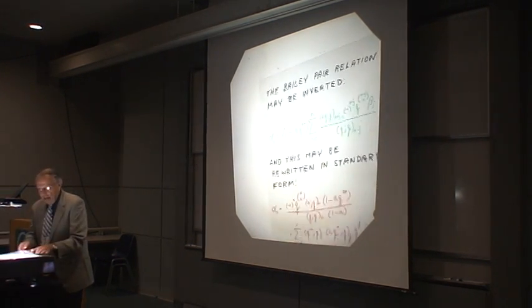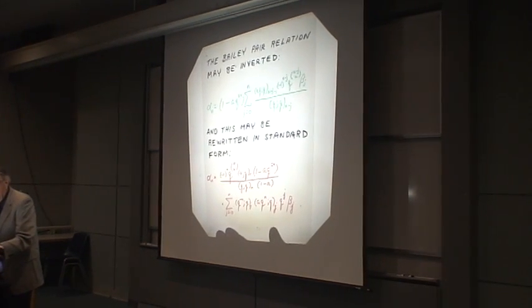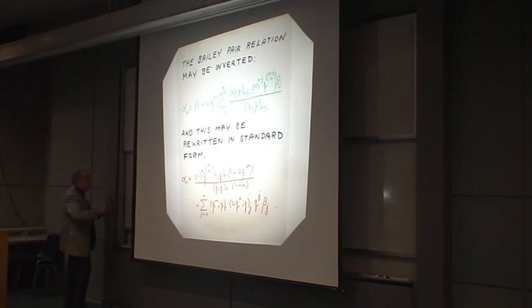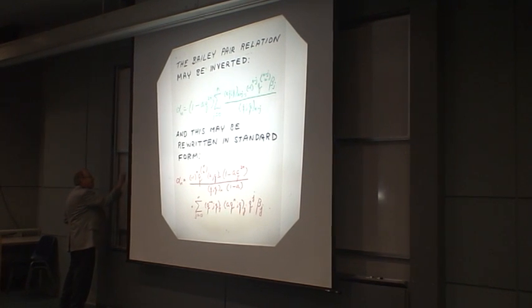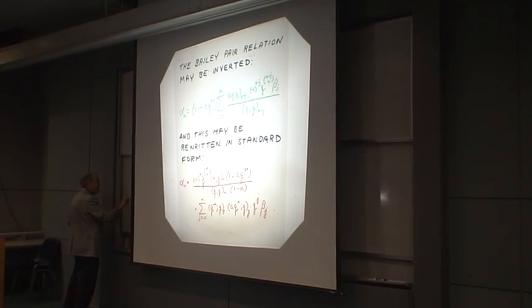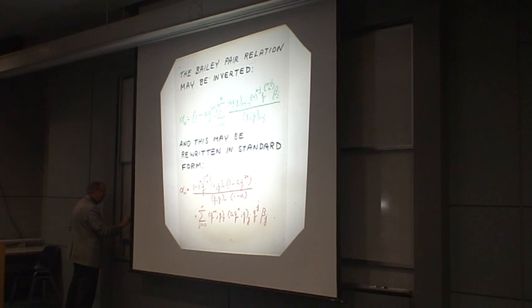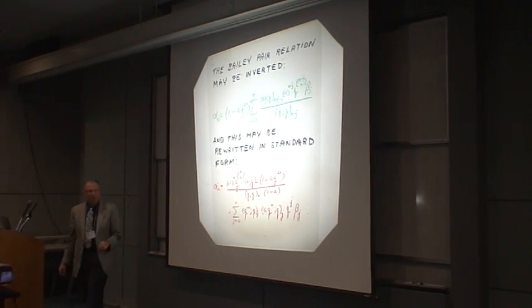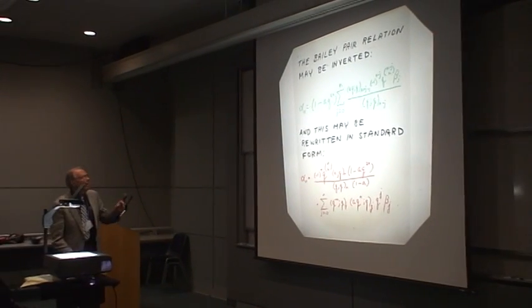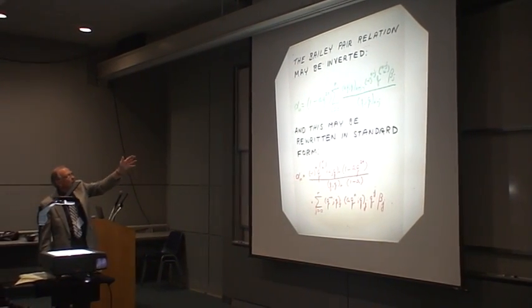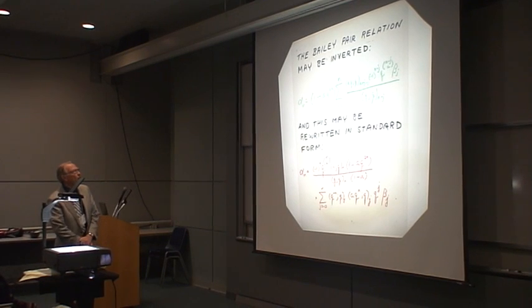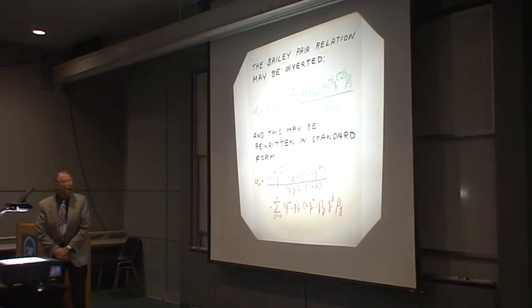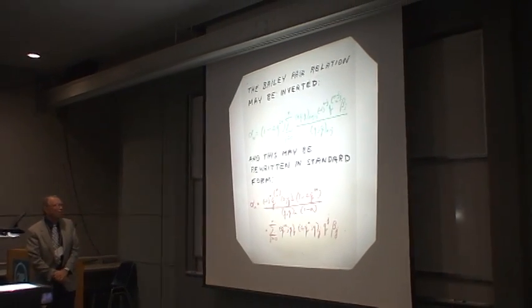So if one introduces a second parameter in this, namely an A to the N here, an A to the N here, and an A there, then there are still relations between alphas and betas. And indeed, the alphas can be computed from the betas by the formula that you see in green.